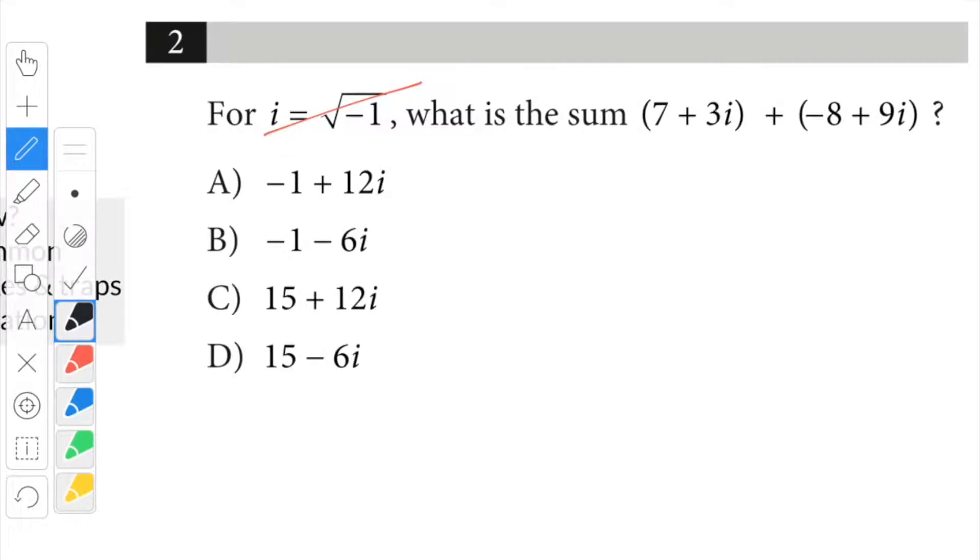When I combine like terms, I cross them out as I use them. 7 crosses out with negative 8 to make negative 1. 3i plus 9i is 12i. And all of a sudden you get your answer.